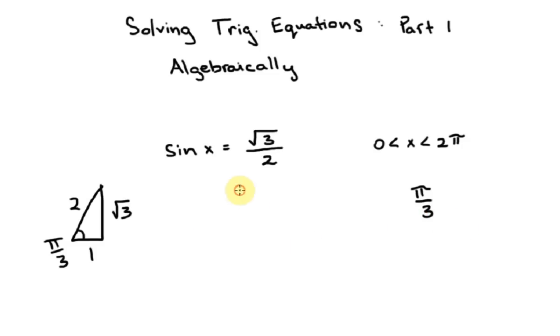To get the other answer, we would look at our grid, not very well drawn, but anyway, and use the CAST rule and say to ourselves, where is sine going to be a positive result? Well that would be here and also in this quadrant. Now we have our π by 3 which happens to be in the first quadrant. So I'm going to draw that and say, yeah, there's π by 3. So there's one of our answers.